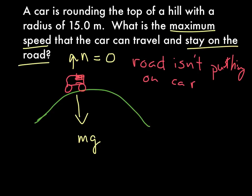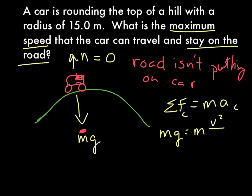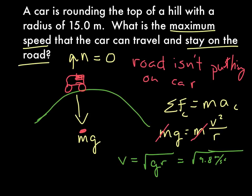There's only one direction to consider. Sum of forces towards the center — here's the center of our curve — equals m times a_c. In this case, it's just mg equals m times v squared over r. The m's cancel, and we get v equals the square root of gr, which equals the square root of 9.8 meters per second squared times the radius of 15 meters, giving v equal to 12.1 meters per second.